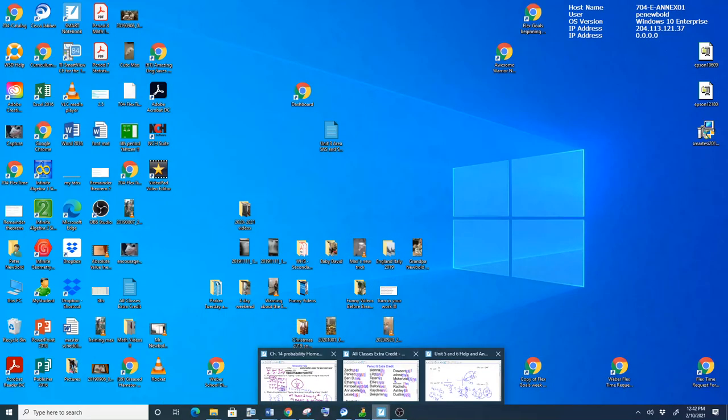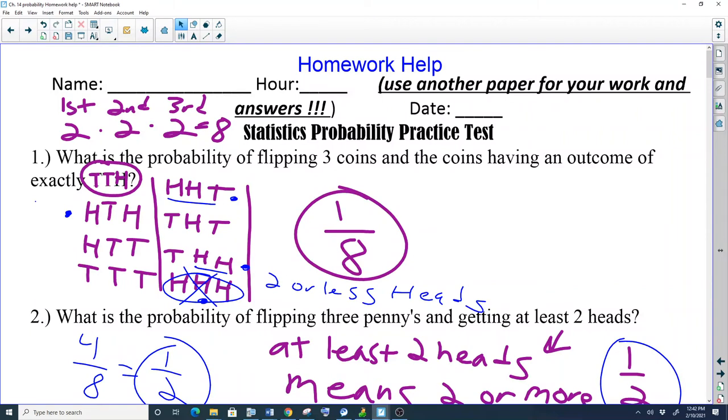Okay, so we're going to start off with some easy ones here. So we already discussed this one last time, right? You're going to see this one on the test for next time. So probably flipping three coins and getting the outcome to be exactly tails, tails, heads, or heads, heads, tails, or heads, tails, heads. They're all the same. There's only one way to do that specific event out of all eight different ways. Right?